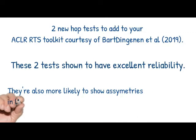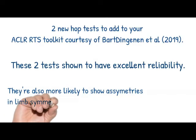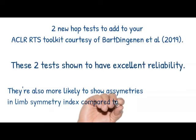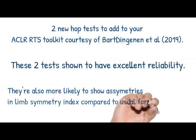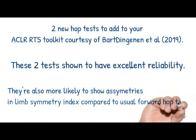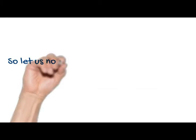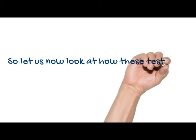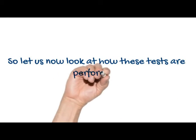Courtesy of Bart Dingenan et al., these two tests have been shown to have excellent reliability. They are also more likely to show asymmetries in limb symmetry index compared to the usual forward hop tests. So let us now look at how these tests are performed.